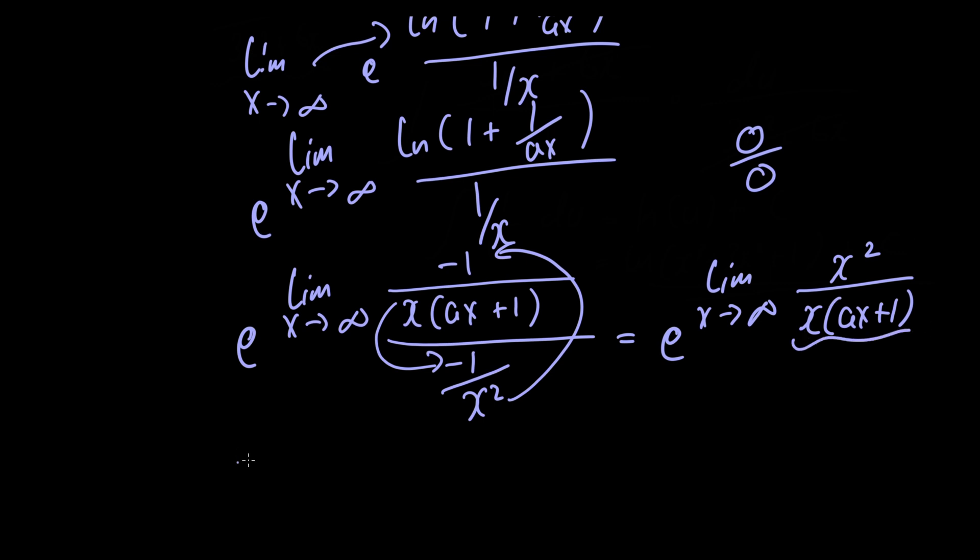Now we can cancel a factor of x and we're left with e raised to the limit as x approaches infinity of x divided by a times x plus 1. What we're going to go ahead and do is divide by the highest power of x. That leaves us with e raised to the limit as x approaches infinity of 1 divided by a plus 1 over x.